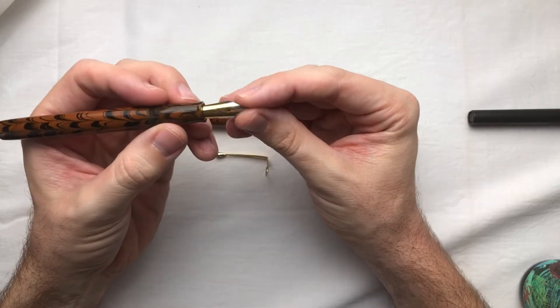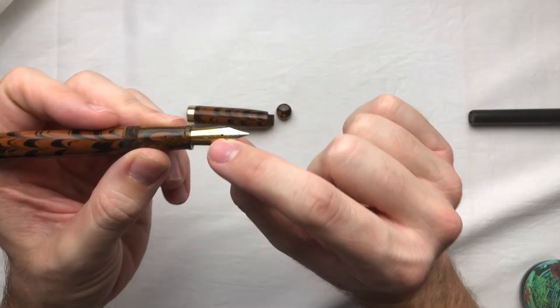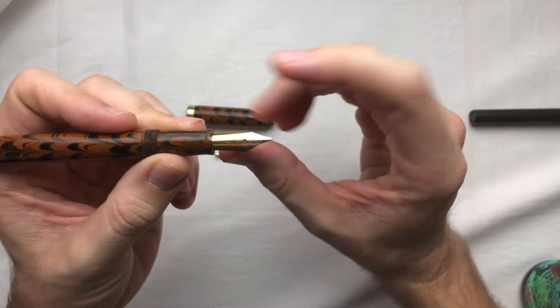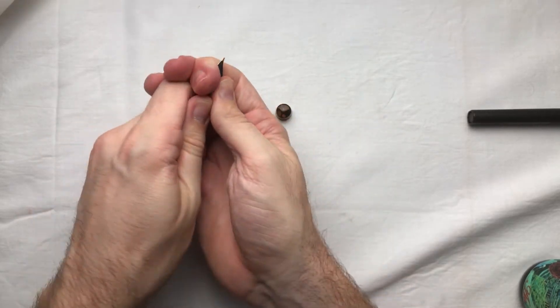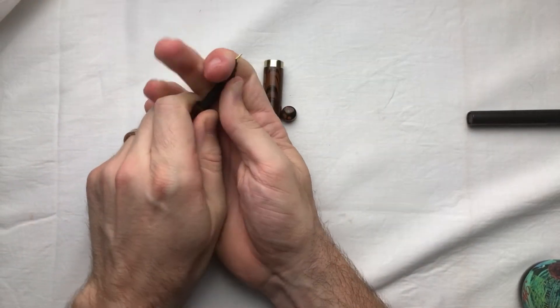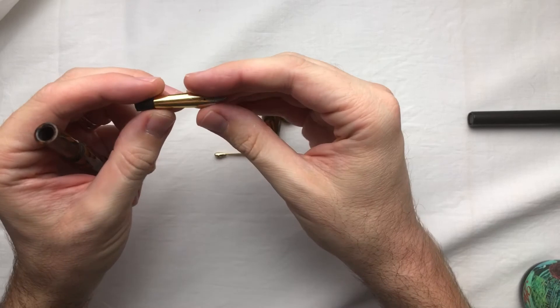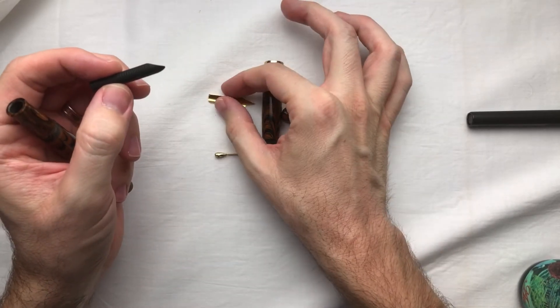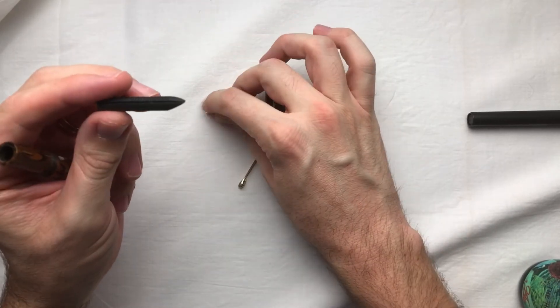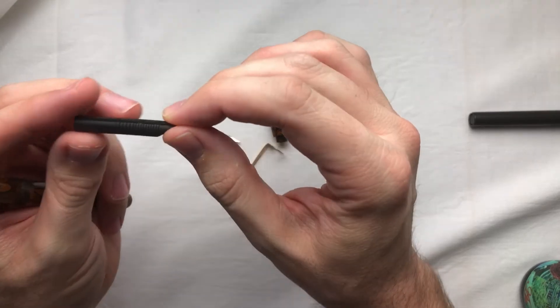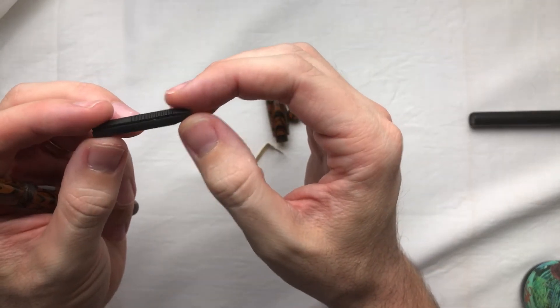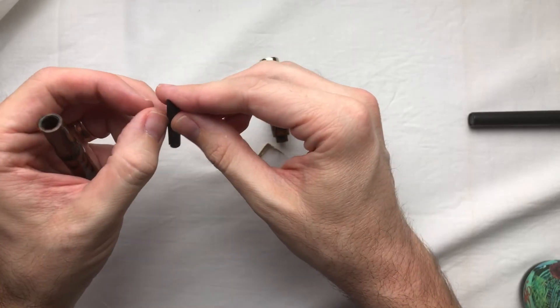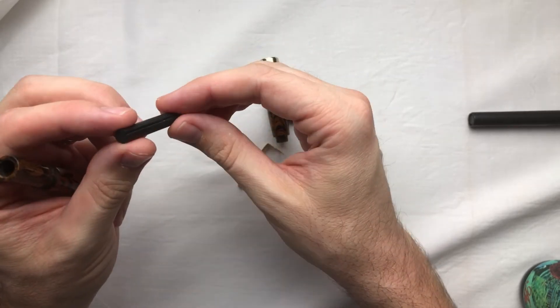This is also an extra fine. As it says on the front here, it says extra fine. And if I pull on it, it takes a little bit of pressure. There we go. The nib pulls out completely. And the hand cut ebonite feed, you can totally see that it's not symmetrical. It means that this was actually made, a handmade feed. Which is cool.